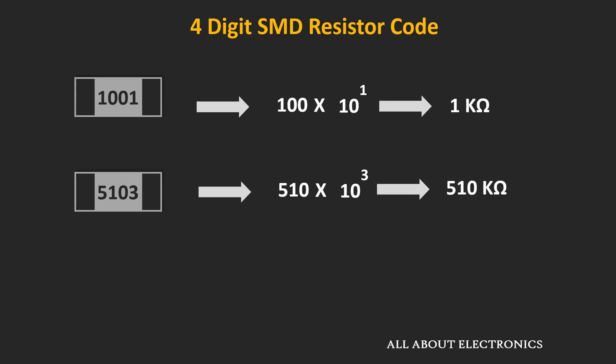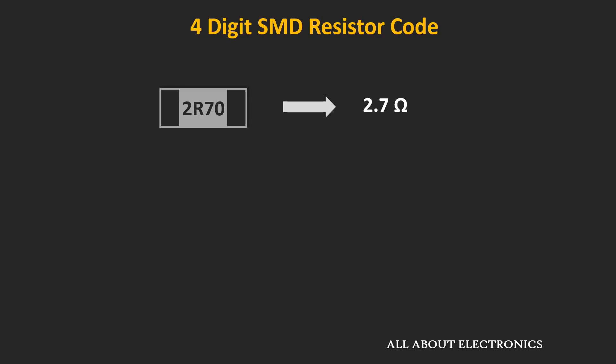In this way, using the four-digit coding scheme, we can find the resistor value. In the four-digit coding scheme, the letter R is also used to define the position of the decimal point. For example, if the code is 2R70, the value is 2.7 Ω. And for the code 0R24, the value would be 0.24 Ω.